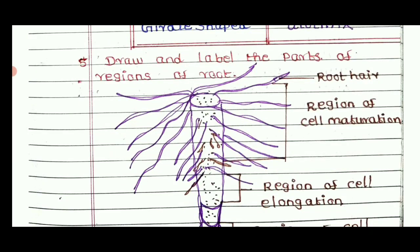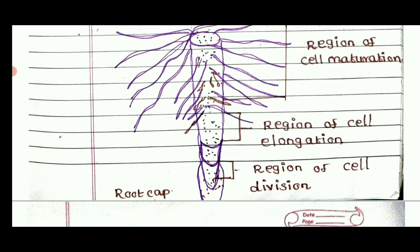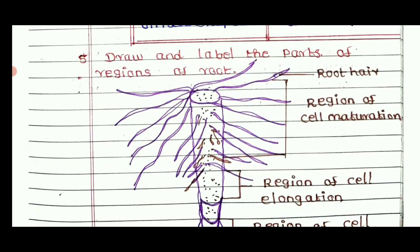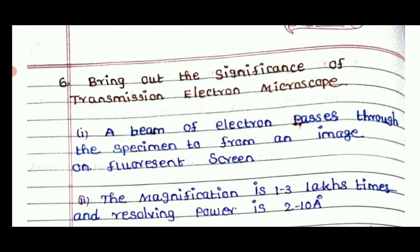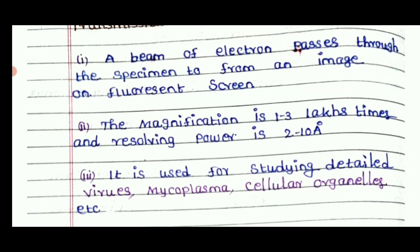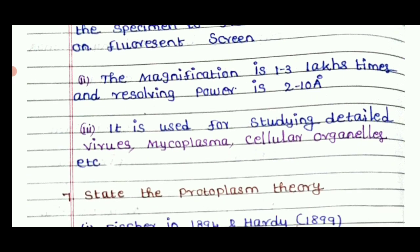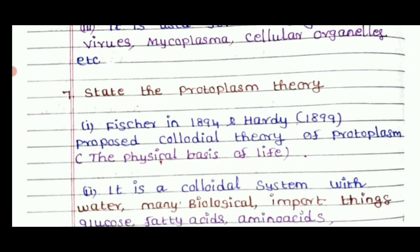If we look at the diagram of plant cell root — diagram is 5-mark; 3-mark is the diagram. Draw and label parts of regions of root: regions of cell maturation, regions of cell elongation, region of cell division, and root cap. Evidence of transmission electron microscope: a beam of electrons passes through the specimen forming an image on a fluorescent screen. Magnification is 1 to 2 lakh times. Resolving power is 2 to 10 Angstroms. It is used for studying details of viruses, mycoplasma, and cellular organelles. State the protoplasm theory.